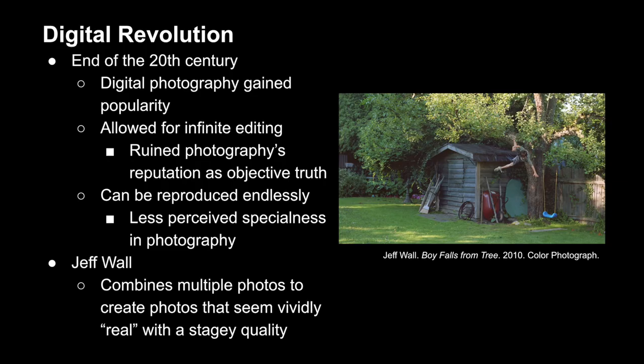By the end of the 20th century, digital photography gained popularity. This allowed for infinite editing, and it really undermined photography's reputation as having objective truth. In addition, these new technologies allowed for endless reproduction, which generally lessened the perceived specialness of photography for both consumers and makers. Some artists embraced the digital revolution, like Jeff Wall, who combined multiple photos to create a single image that seems vividly real while also having a stagey, uncanny quality.